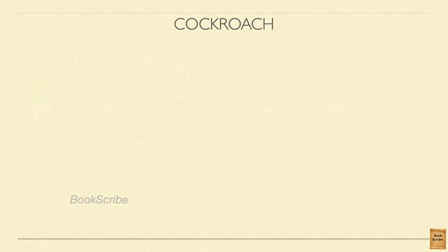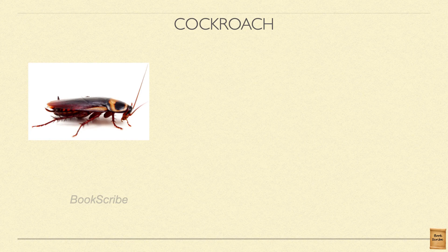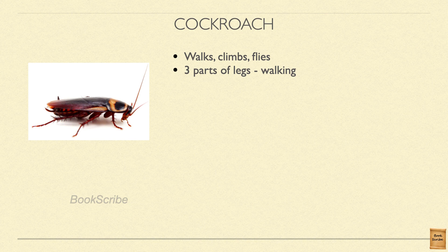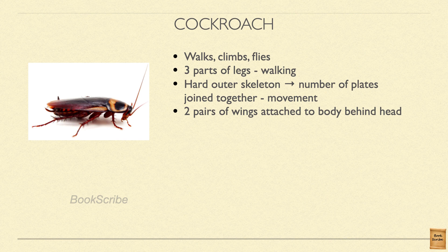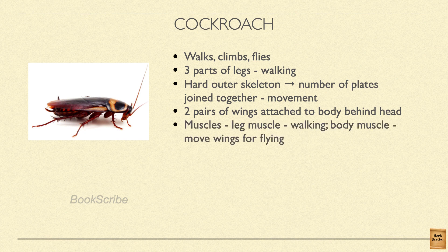Next we are going to see the cockroach. A cockroach walks, climbs mostly over walls, and also flies. A cockroach has three pairs of legs — totally six legs — using which it walks. The body of the cockroach is covered by an outer skeleton made up of a number of plates attached continuously, and these plates help the cockroach move. A cockroach also has two pairs of wings, visible on top of the cockroach, attached behind the head. The cockroach has two important muscles: the muscles near its legs, which help it walk, and the body muscles, which help the wings for the cockroach to fly.